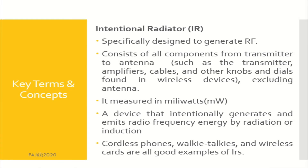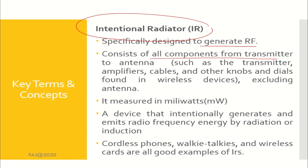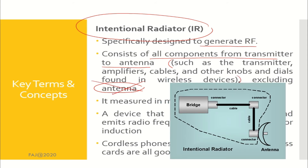The next component is intentional radiator, or IR. IR is specifically designed to generate radio frequency. IR consists of all components from the transmitter to the antenna — such as transmitter, amplifier, and cable — excluding the antenna. It means that IR is the entire radio frequency system, except for the antenna.